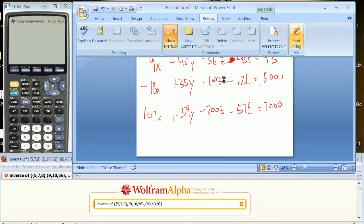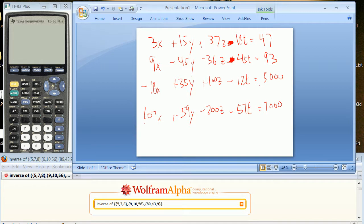So you have your coefficients times your variables equals whatever we call that on this side. So your variables are x, y, z, and time. Your numbers on the other side are 47, 93, I think they're called the constants, 5,000 and 7,000.